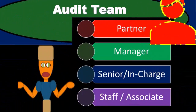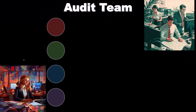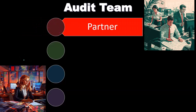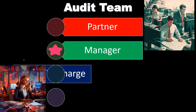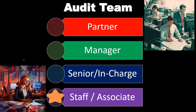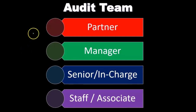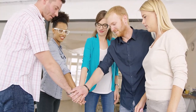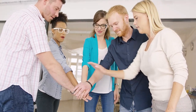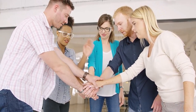Here is the general overview of the audit team. When we put together the audit for a publicly traded company, who's going to be involved? We have the partner, the manager, the senior or in-charge, and the staff and associates. This is the top-down hierarchy of the audit engagement.